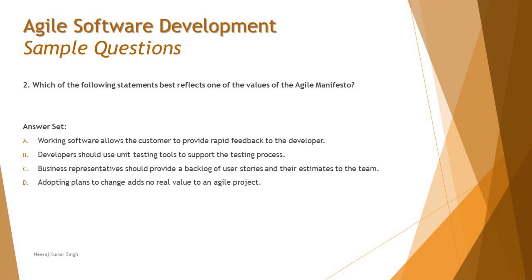Option B says 'Developers should use unit testing tools to support the testing process.' While unit testing is part of Agile methodology, it is not one of the four Agile Manifesto values. The Manifesto never discusses specific tools or processes, so option B can be ruled out.